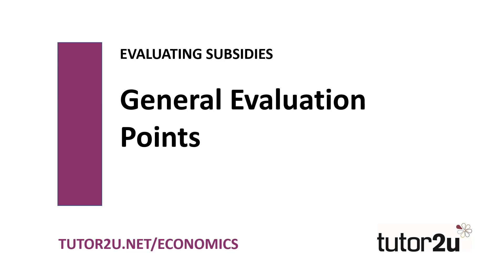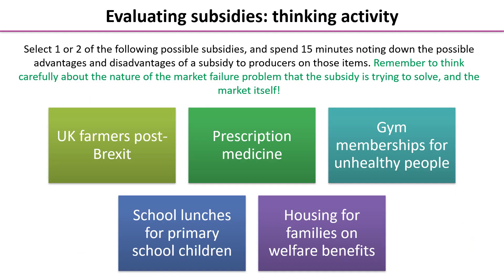In this section, we're going to look at general evaluation points and we're going to ask you to do some thinking and some writing. We would like you to select one or two of the following possible subsidies and spend about 15 minutes or so noting down some advantages and some disadvantages of the subsidy to the producers of those items. What we want you to do is to think about these subsidies in context.